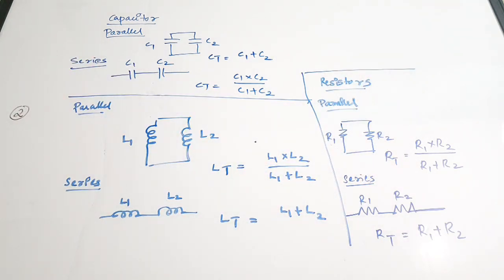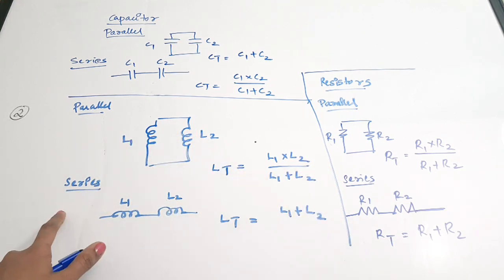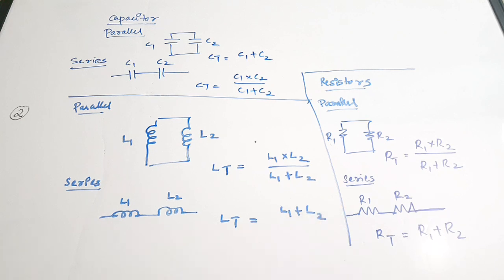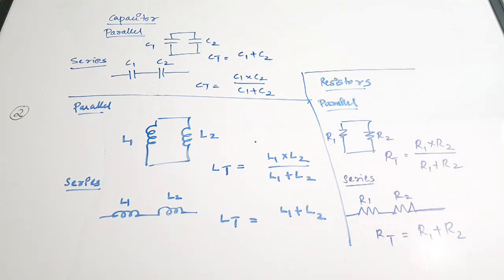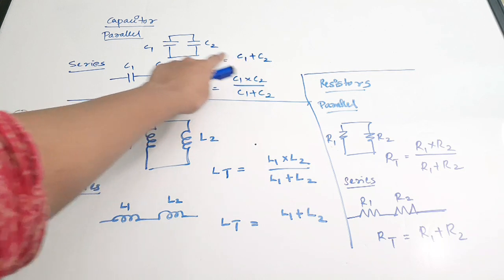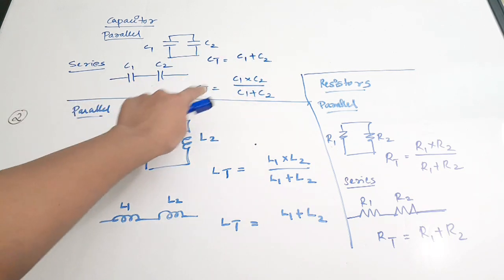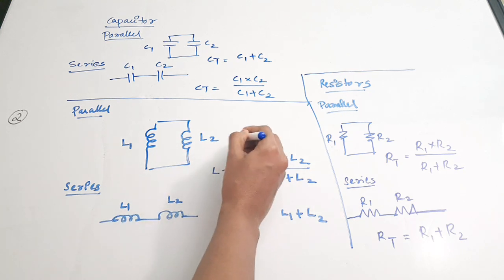To summarize: for inductance, parallel gives L1×L2/(L1+L2) and series gives L1+L2. Same for resistors: parallel gives R1×R2/(R1+R2) and series gives R1+R2. For capacitors it is the reverse: parallel gives C1+C2 and series gives C1×C2/(C1+C2). Please note this down — it will be very useful. For the second question regarding inductors in parallel, the correct answer is option B.